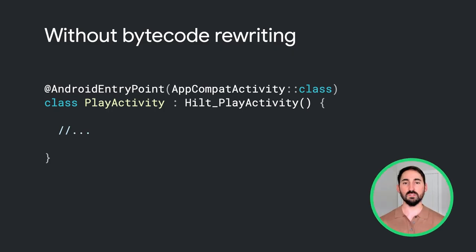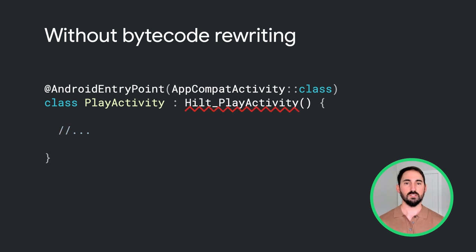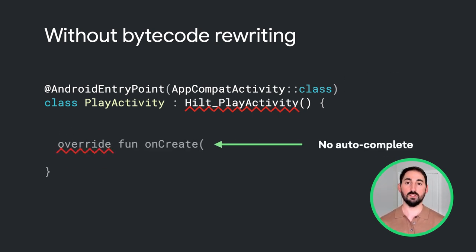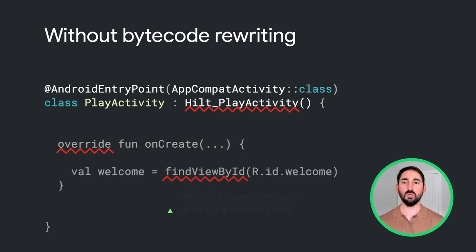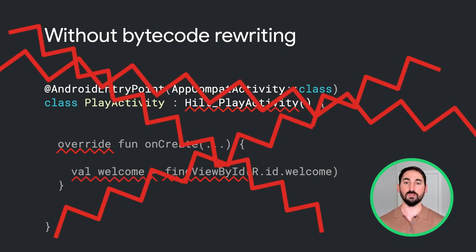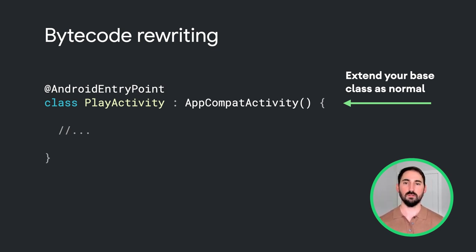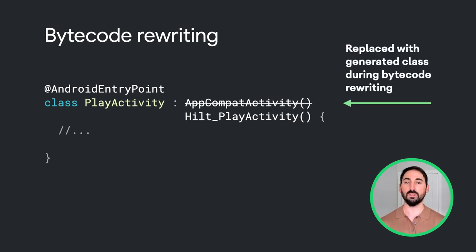To motivate bytecode rewriting in Hilt, let's look at a familiar example. We looked at the Android Entry Point annotation and how it's used to generate a base class that performs injection. While extending this base class works in practice, it can cause quite a bit of issues with your IDE. Since the generated class does not exist until after you've successfully compiled your code, you'll often see red squiggles in your IDE. In addition, you won't have access to autocomplete for things like overriding methods, and you won't be able to access methods from the base class. The Hilt Android plugin comes to the rescue by enabling bytecode rewriting on your Android Entry Point classes. With the Hilt Android plugin enabled, all that's required is to annotate your class with Android Entry Point, and you can extend your normal base class. During bytecode rewriting, the Hilt Gradle plugin will swap your base class with the generated base class — but as this process happens directly in the bytecode, it's invisible to the user.